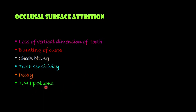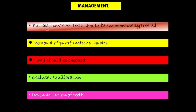This will strain the stomatognathic system and can eventually lead to TMJ problems. Another sequela of occlusal surface attrition is cheek biting — since there is flattening of the cuspal inclines, the cheeks or tongue tend to come between the upper and lower teeth, causing biting of the cheek or tongue. Since the enamel surface is worn off, the underlying dentine becomes sensitive, and the patient develops hypersensitivity. Management includes endodontic treatment for pulpally involved teeth, checking for parafunctional habits and TMJ problems, occlusal equilibration, and desensitization.